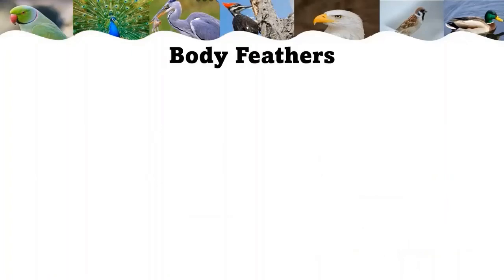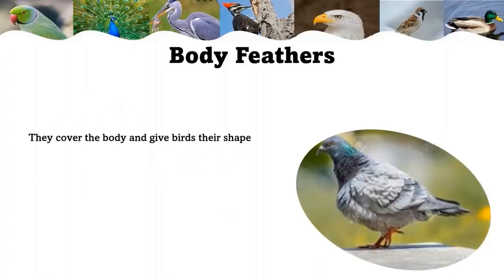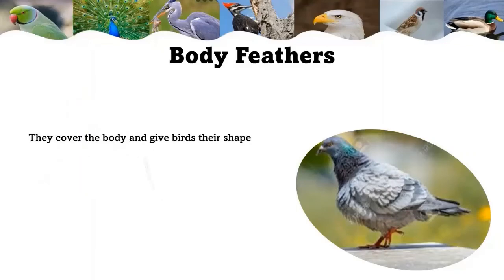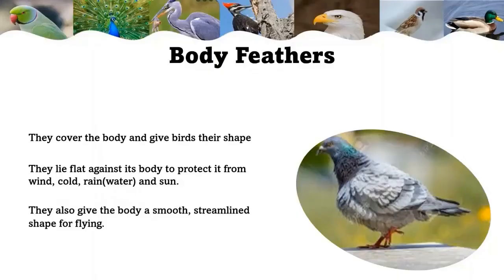Body feathers cover the body and give birds their shape. They lie flat against the body to protect it from wind, cold, rain, water, and sun. They also give the body a smooth, streamlined shape for flying.